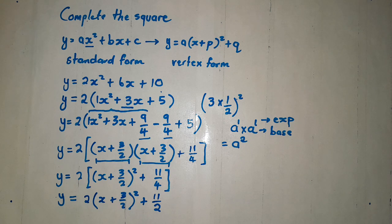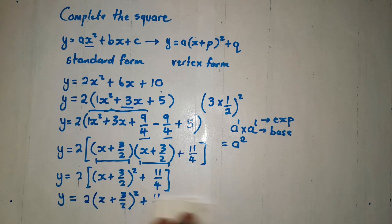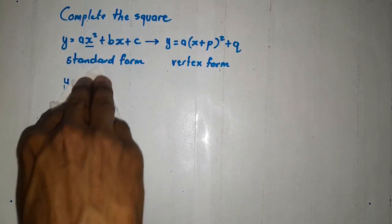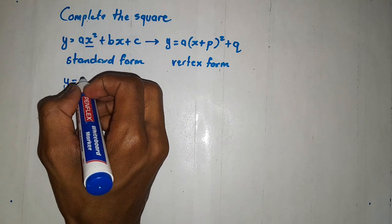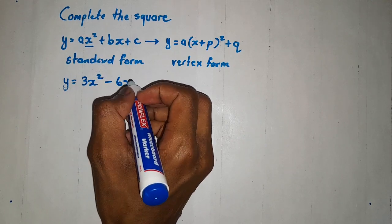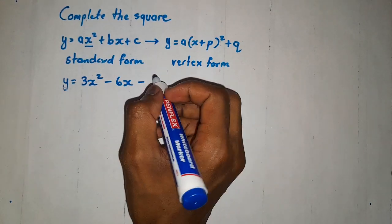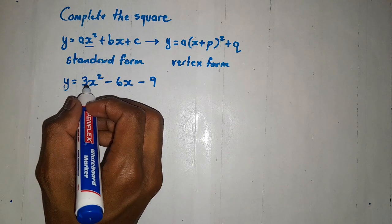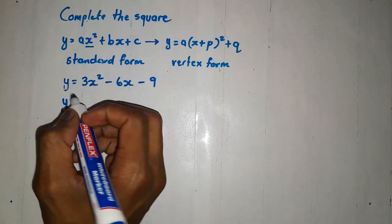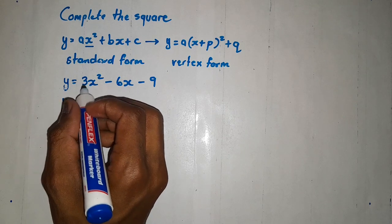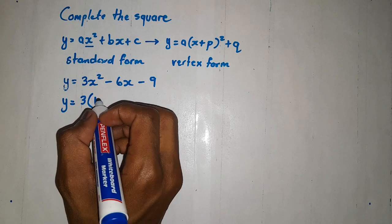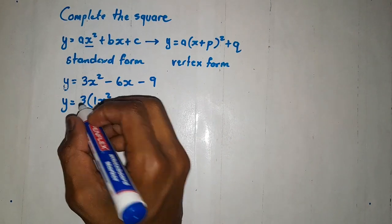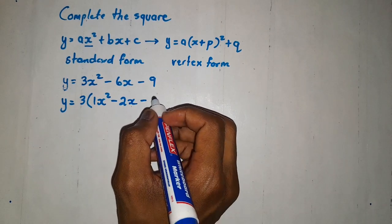Let me give you another example. Let's say now, I decide to give you this one. Let's say if now, I give you, let's say, 3x squared minus 6x minus 9. We apply the same principle. We must make our x, the coefficient of x squared to be 1. Then let us take out the coefficient, which is 3 in this case. Then we are going to have 1x squared minus, we need 2 in order to get 6. When we multiply 3 by 2, we get 6x minus 3. We close.